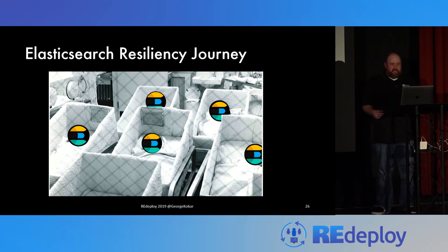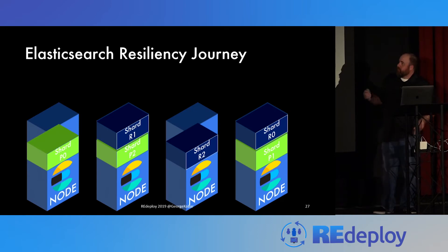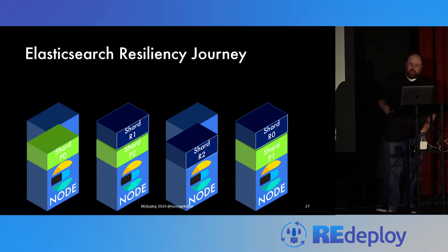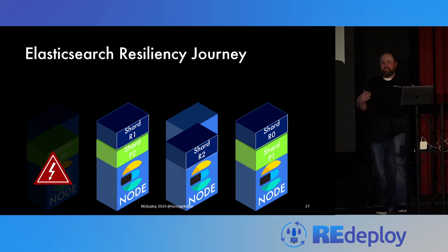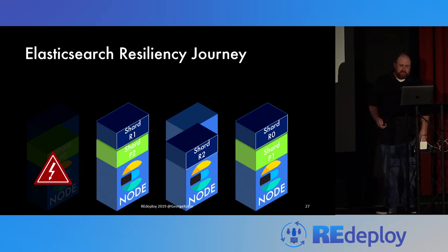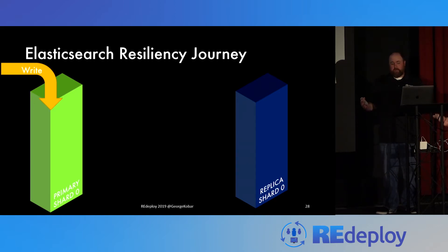Very early in our Elasticsearch journey, back in version 1.0 around 2014, clusters had very few nodes. When we looked at recovering from failures, it was relatively easy. However, if a node had a power failure, we had to think about data being written into Elasticsearch, filling a memory buffer before committing to disk. How do we capture that data if it powers off before it's committed? One of the things we looked at early was how to build resiliency into that particular situation. The answer was the transaction log — the translog. Each shard has one.